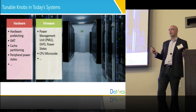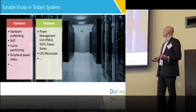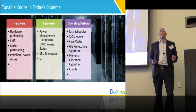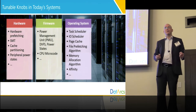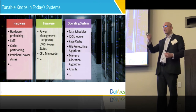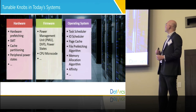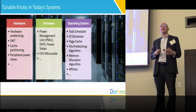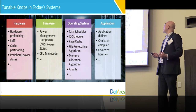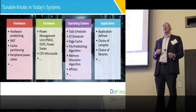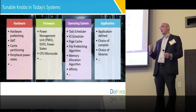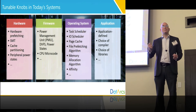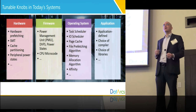There are also knobs in firmware: dynamic voltage frequency scaling, power management, and the choice of microcode. In the operating system, you have hundreds of knobs — task affinity, software prefetching, memory allocation algorithms, and IO scheduling. The list goes on to hundreds of them. You can also tune things in the application layer, for example in the framework layer like MPI, or in the application itself if it exposes application-specific knobs.